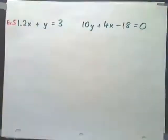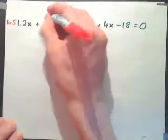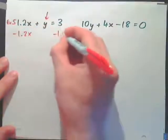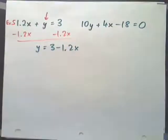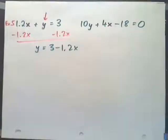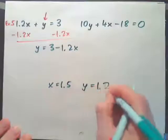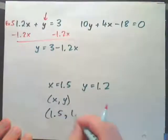For example 5, the easiest variable to solve for first is y in the first equation — it hasn't been multiplied by anything. Subtract 1.2x from both sides to get y equals 3 minus 1.2x. Then substitute that in for y in the other equation and solve for x. The final answer should be x equals 1.5 and y equals 1.2, written in ordered pair form as (1.5, 1.2).